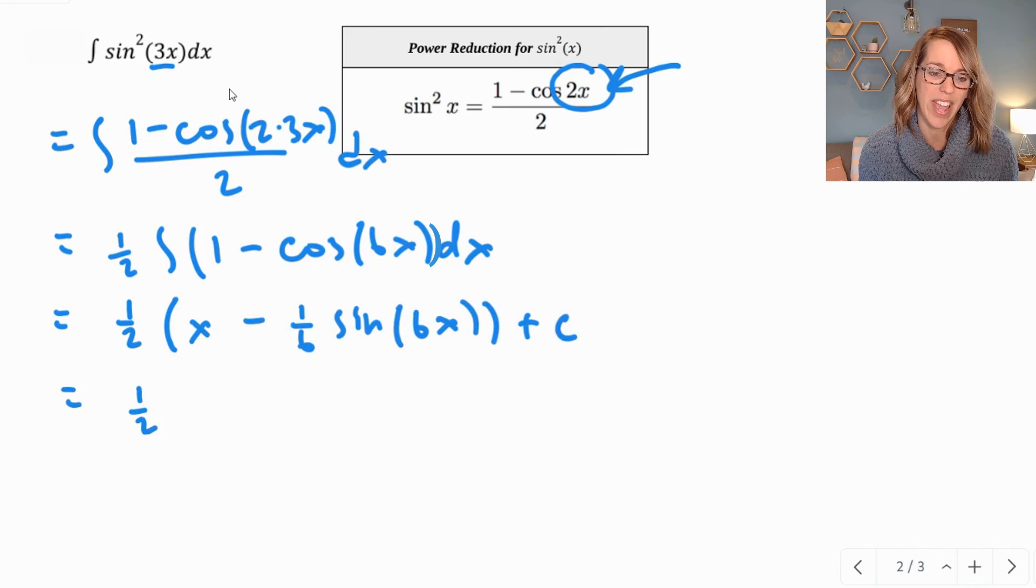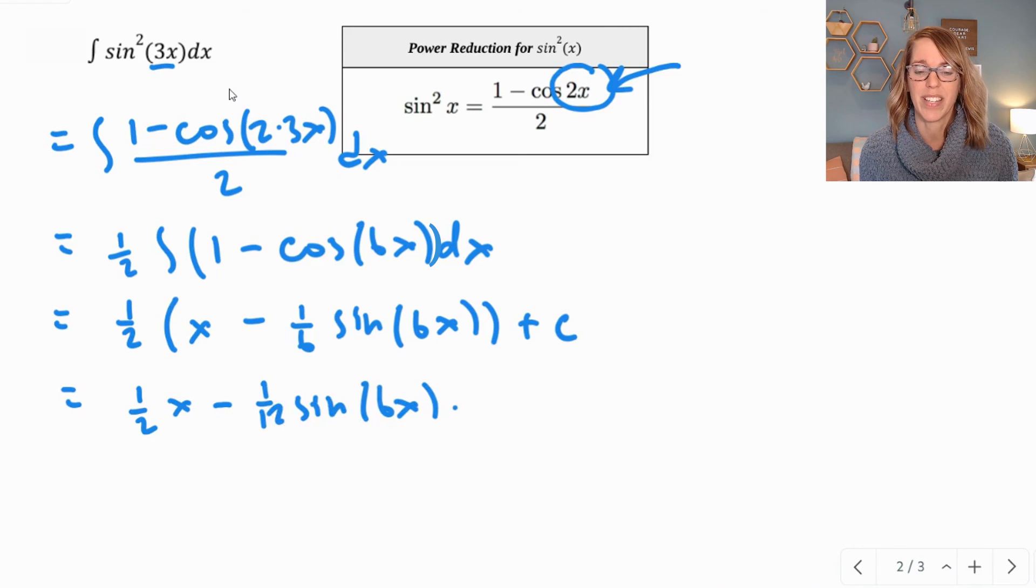Distributing that 1 half through, I get 1 half x minus 1 twelfth sine of 6x plus c.